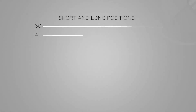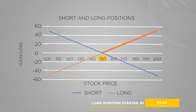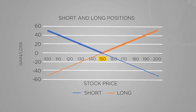The graph below shows how the long and the short positions are mirror images. The long position started at 150 and profits above it and loses below it. The short position also started at 150, but profits when the stock price falls and loses if the stock price rises.